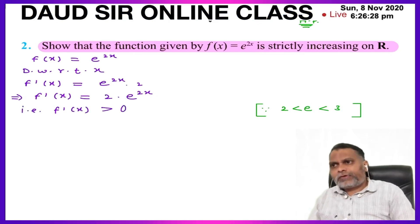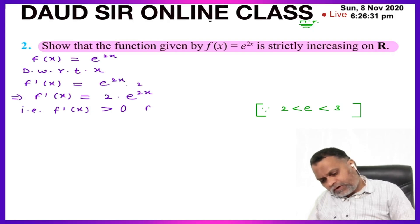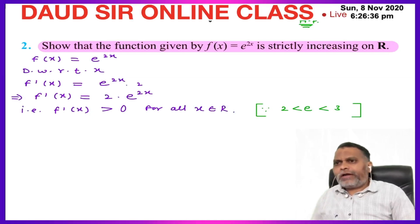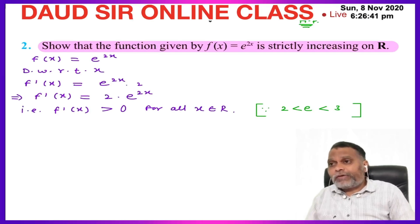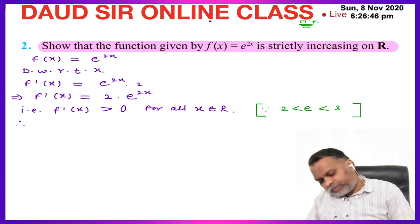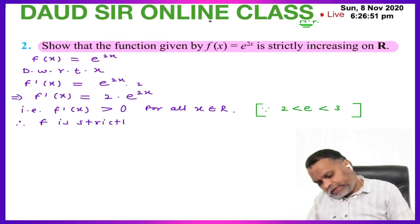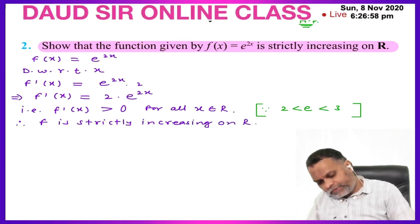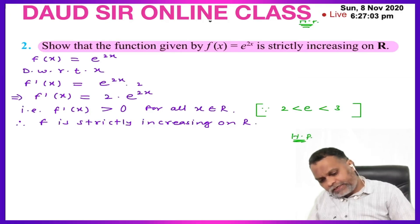For all x belonging to R, for any real value of x, the derivative is greater than zero — it is a positive quantity. This means f is strictly increasing on R. As stated in the question, this is the proof that f is a strictly increasing function.